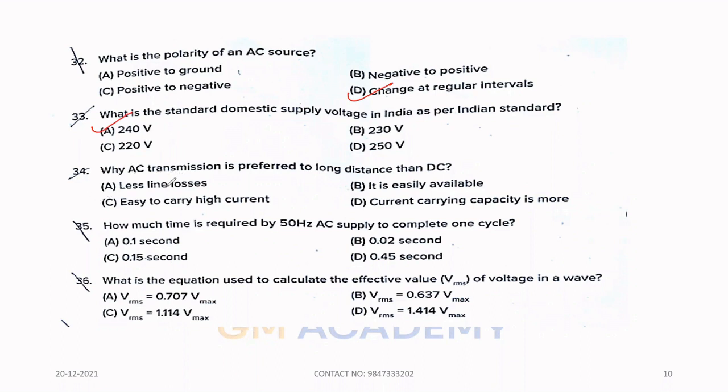Thirty-four. Why AC transmission is preferred for long distance than DC? Option A, Less line losses. Thirty-five. How much time is required by 50 hertz AC supply to complete one cycle? T equals 1 by F, which is equal to 1 by 50. Option B, 0.02 second.